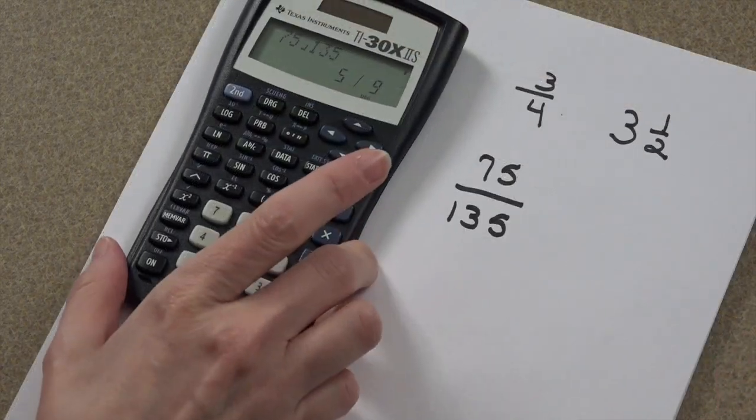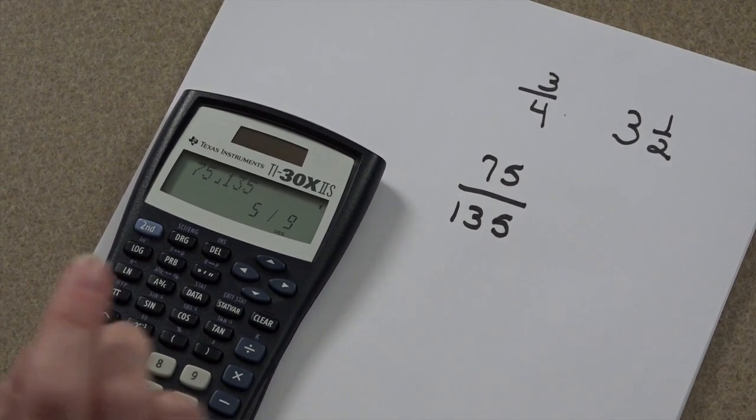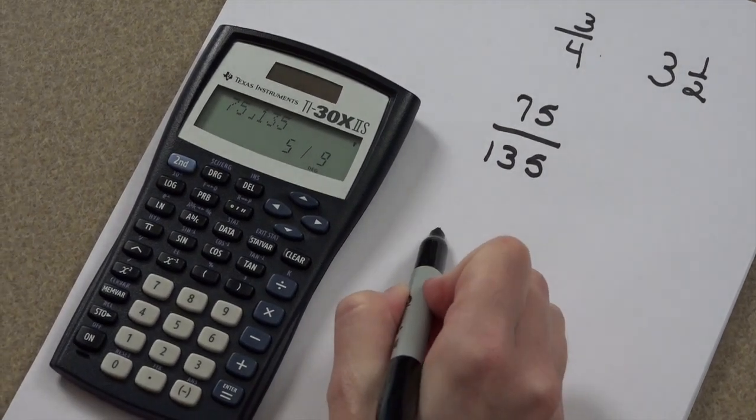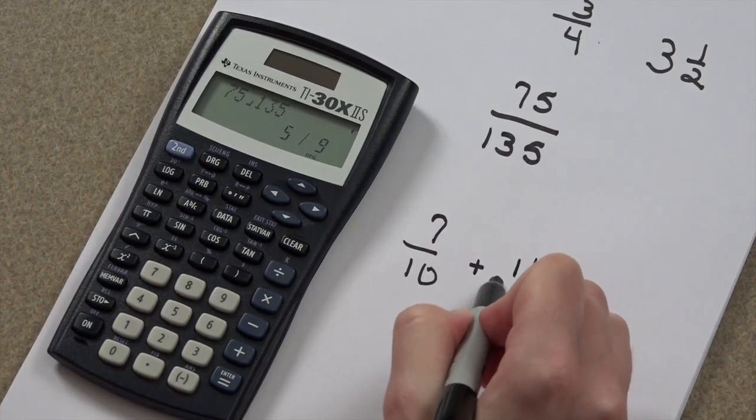Your calculator adds, subtracts, multiplies, and divides fractions also. So let's take 7 tenths and add it to 11 fifteenths.